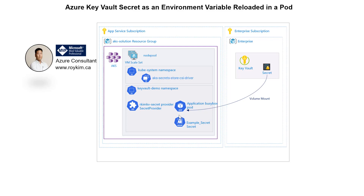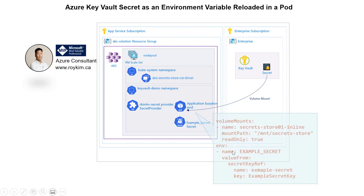Setting the stage: what I want to achieve is the scenario where, if the secret is updated, how will that be reflected in the Kubernetes pod? One thing to note is that the Kubernetes secret is not updated automatically, so how do we achieve that? This is the snippet as part of the pod where you mount the volume and set up the environment variable to that Kubernetes secret.